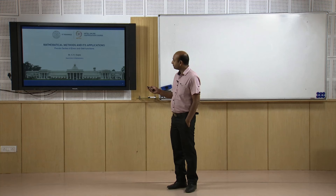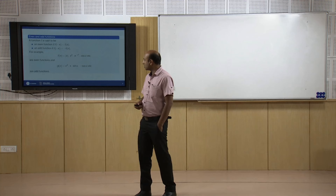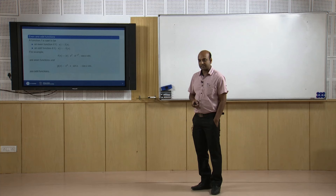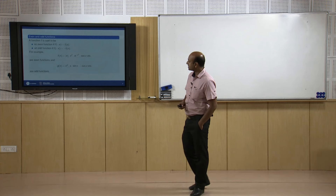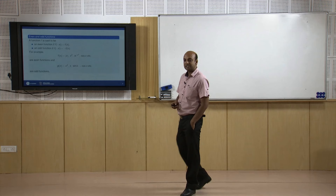Now we will see Fourier series of even and odd functions. We already know that an even function means f(-x) = f(x), and examples include |x|, x², e^(-x²), cos(x), etc. If we replace x by -x in these functions, they remain the same, so f(-x) = f(x) and therefore these are even functions.